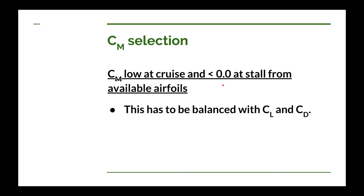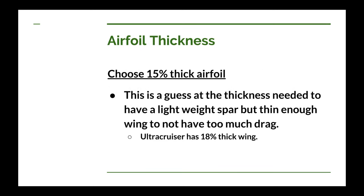And now for our last selection criteria — the thickness. I'm going to take a guess and try a 15% thick airfoil. I know the Ultra Cruiser has an 18% thick airfoil, but I think I can probably get by with a thinner one to get a little bit less drag while still keeping the structure light enough. The thicker the airfoil, the lighter the spar caps will be. The thinner it is, the heavier I'll have to make the spar caps in order to handle the bending load of the wing. So we have an opposing design trade-off. I'm thinking 15% will probably work.